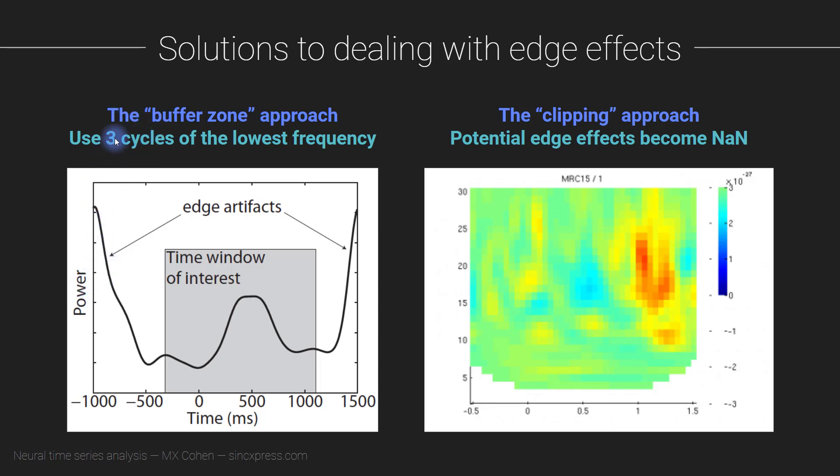So therefore, if your epochs are 600 milliseconds long—I should say the buffer zone is 600 milliseconds long in the beginning, 600 milliseconds long at the end—I would say that is more than enough. You can sleep comfortably without ever worrying about edge effects contaminating your signal.